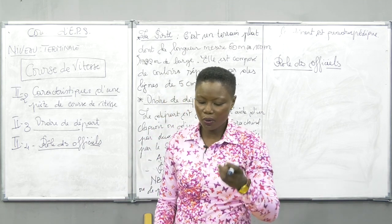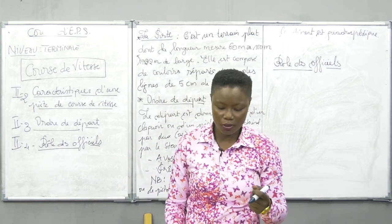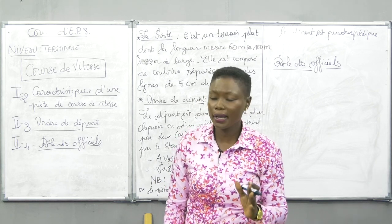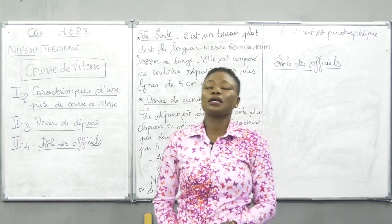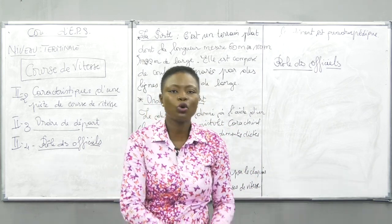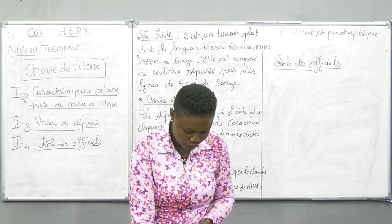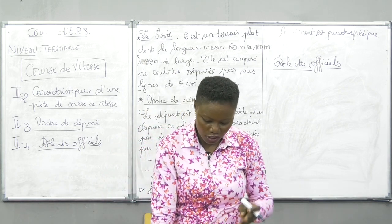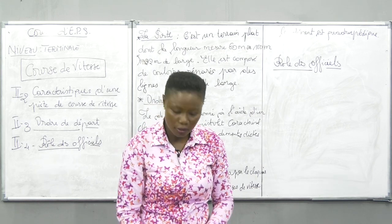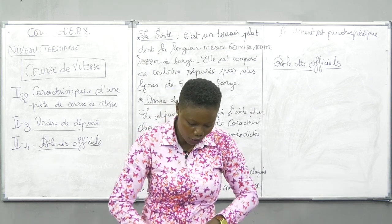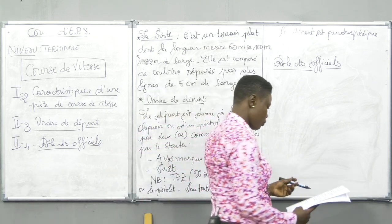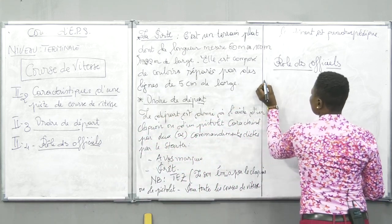Le secrétaire, c'est celui qui relève les performances. Les juges arbitres, ils veillent sur le changement de couloir — c'est quand un élève qui était dans le couloir 3 peut se retrouver dans le couloir 4. Nous avons les juges à l'arrivée: ils veillent sur l'arrivée des élèves ou des athlètes. Nous allons tout mettre au tableau.